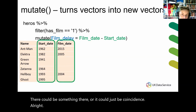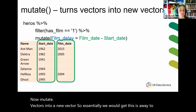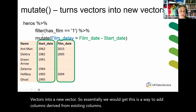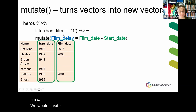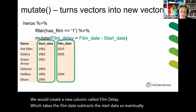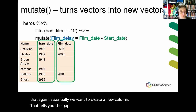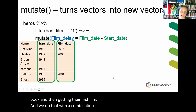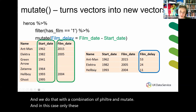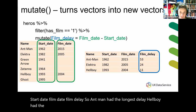Mutate turns vectors into a new vector — essentially it's a way to add columns derived from existing columns. We filter by has_film so we're only looking at characters that have films, then create a new column called film_delay which takes the film date and subtracts the start date. We want to create a column that tells you the gap between a character being first published in a comic book and getting their first film. In this case only three characters have films: Ant-Man had the longest delay, Hellboy had the least, and Electra is in the middle.